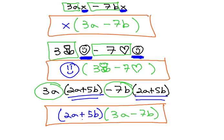We can factor out a binomial greatest common factor that's on both terms, leaving behind the 3a minus 7b for our final solution.